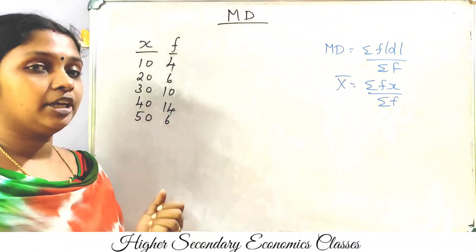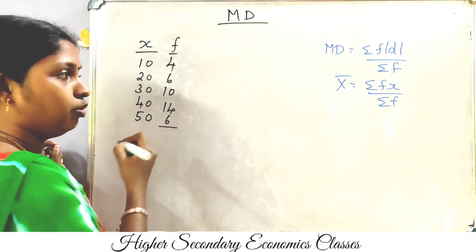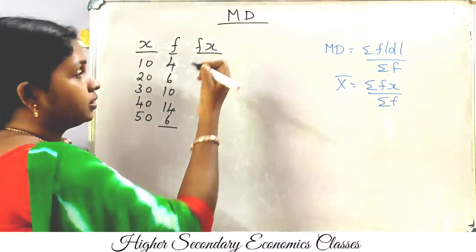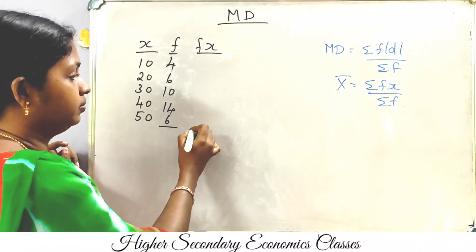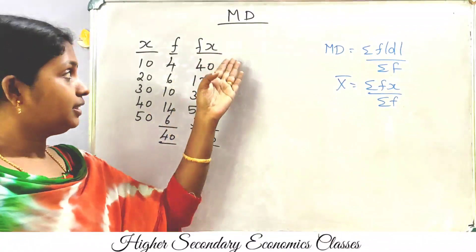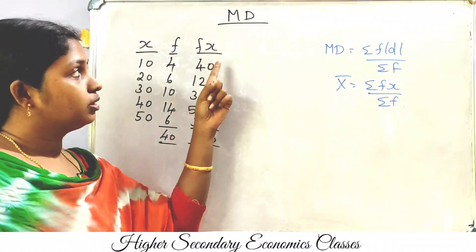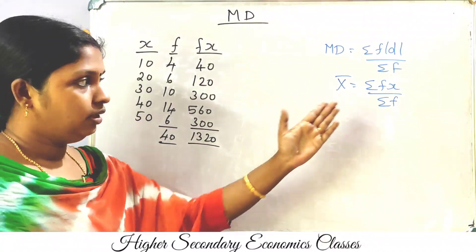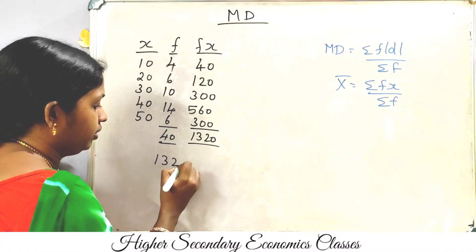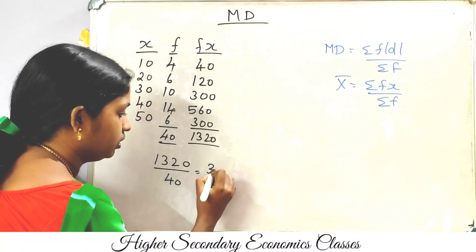We compute fx — that is, frequency multiplied by x — and find the total. The frequency total is 40 and sigma fx equals 33. Applying the equation: x-bar equals sigma fx divided by sigma f, which is 33 divided by 40, giving x-bar equals 33.